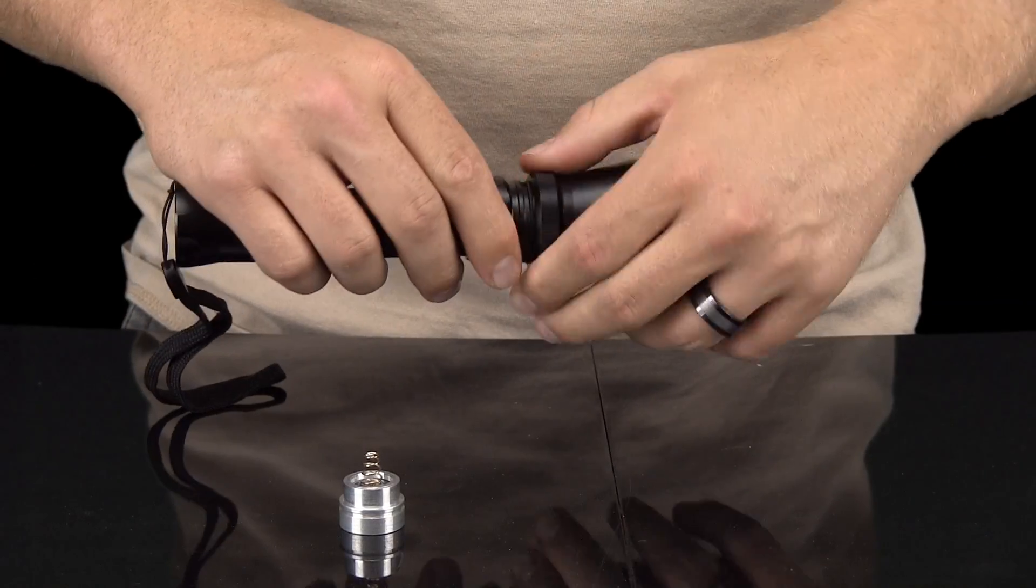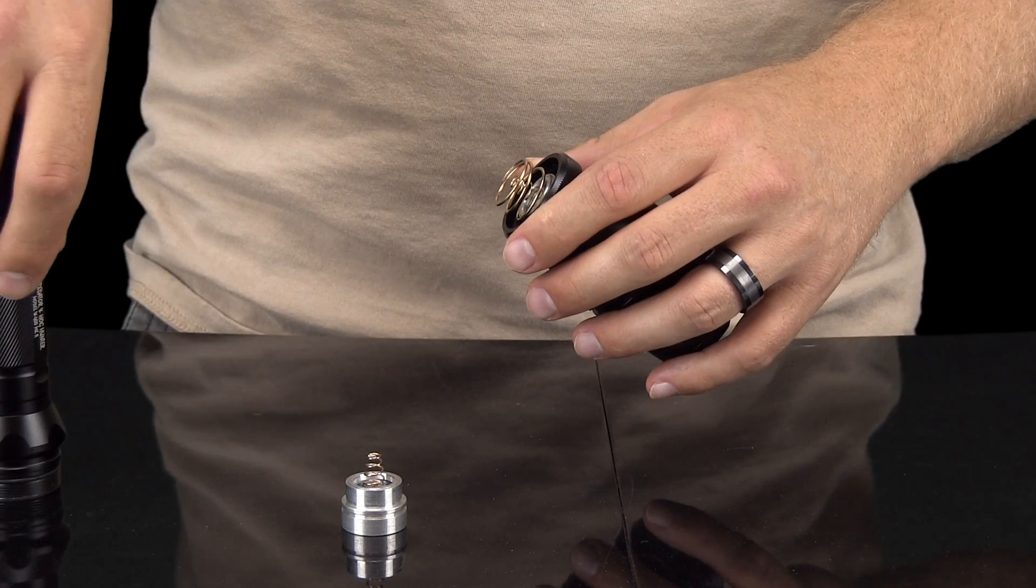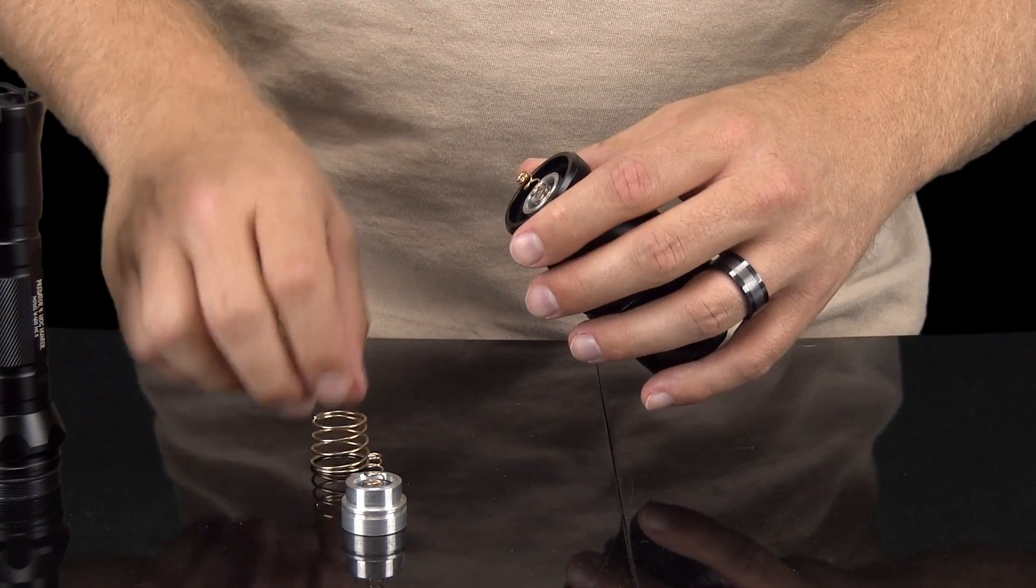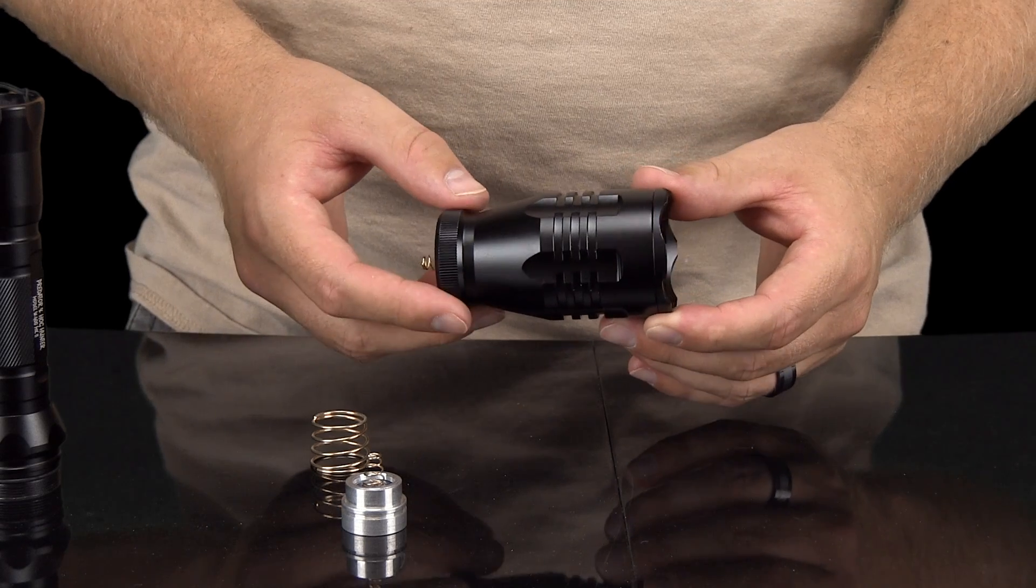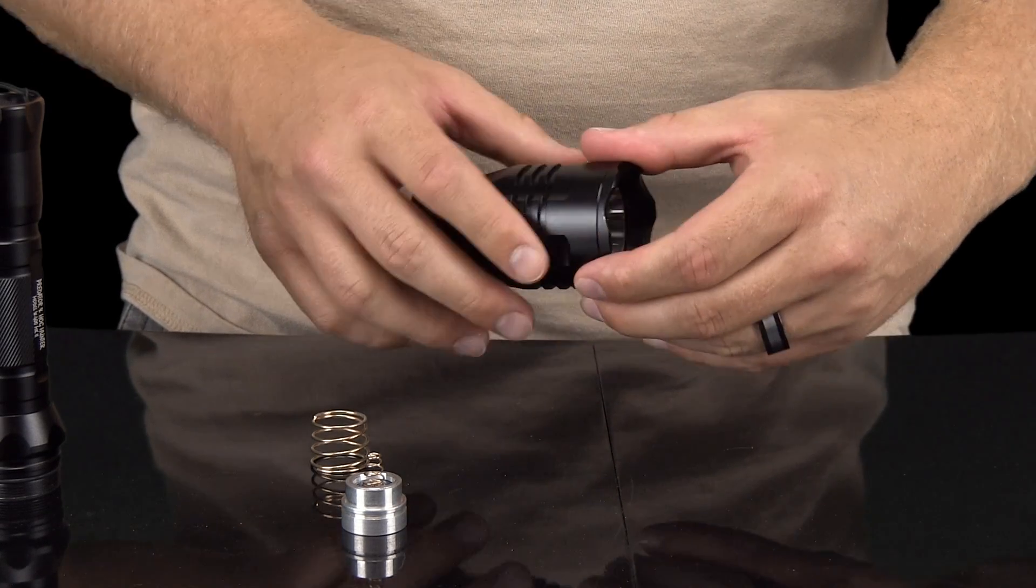The second way to change the LED is a little longer, but allows you to secure the LED assembly into the reflective housing correctly if you cannot get it done the first way. The second method also requires that you remove the bezel from the light housing.